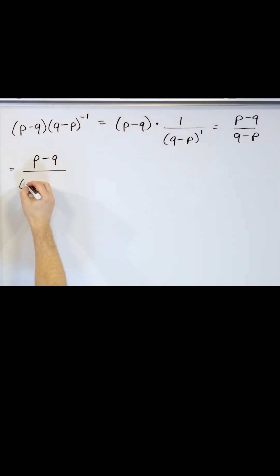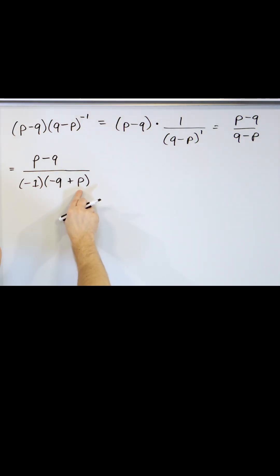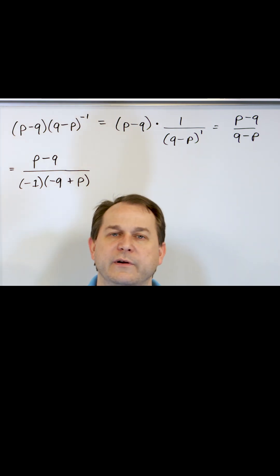I can always factor out a negative 1 from anything that I like. And what it's going to do is it's going to flip the order of these terms around when I do that. So if I multiply this stuff in, it's exactly the same as what I have. And that's what you need to remember because we'll use it a lot.